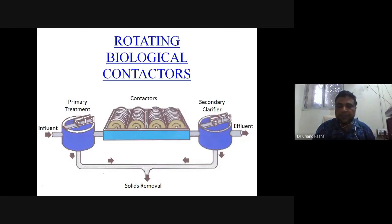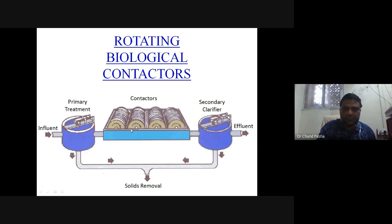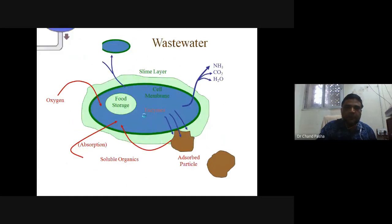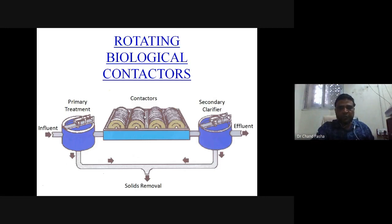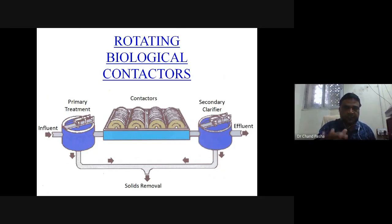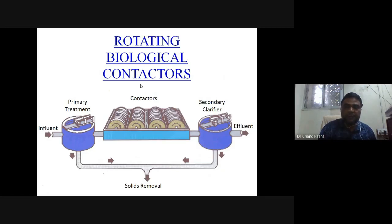The second fixed film method is rotating biological contactors (RBCs). Primary-treated sewage flows in as influent. The contractors are drum structures that increase surface area. They rotate continuously — 40 percent dipped into sewage and 60 percent exposed to atmosphere. As they rotate, the sewage comes to the top and is exposed to air, making oxygen available for attached microorganisms to do efficient treatment. This is used at the Necklace Road sewage treatment plant in Hyderabad.